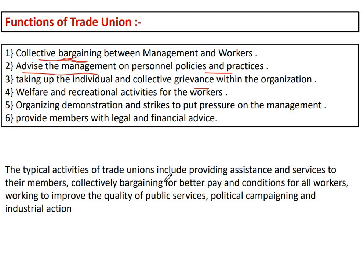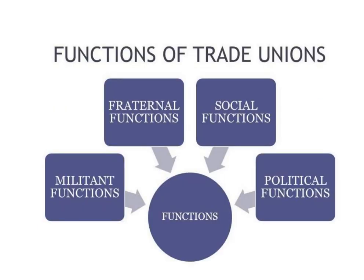The typical activities of trade union include providing assistance and services to their members, giving financial and legal advice, collective bargaining for better pay and working conditions for all workers, work quality improvement, political campaigns, industrial action, and participation in management decisions. So that covers the general functions of trade union. Now broadly, the function of trade union is divided into four parts.